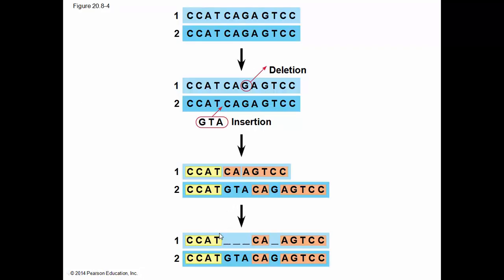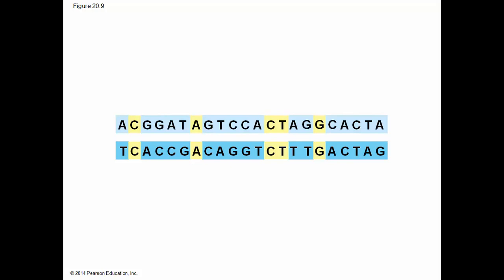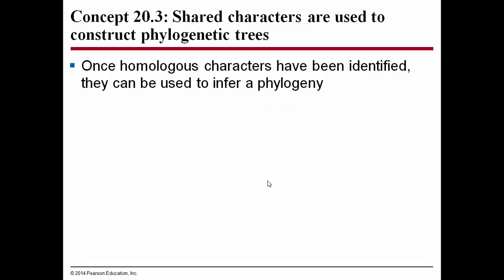When we compare these two DNA sequences, we are able to identify where they are similar. Shared bases in nucleotide sequences that are otherwise very dissimilar are called molecular homoplasies — these are similar traits that have been made dissimilar over time. Here's a molecular homoplasy: you can see the nucleotides that are the same here, whereas the rest of the nucleotide sequence has changed over time. Once homologous characters have been identified, they can be used to infer phylogeny. Homologous characters refers to both morphological characteristics and also the molecular characters of the organism.